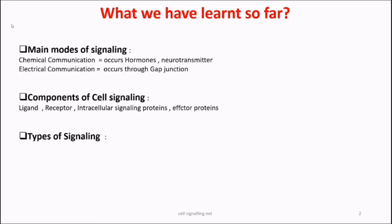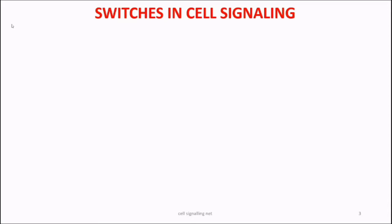There are different types of signaling which we already discussed in the previous video: juxtacrine, paracrine, endocrine, autocrine, and synaptic signaling. In this video we are going to discuss about different switches in cell signaling.